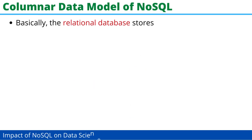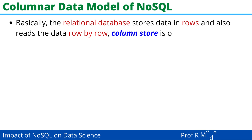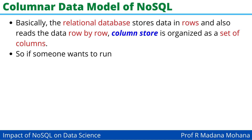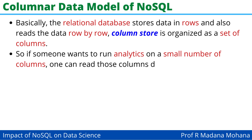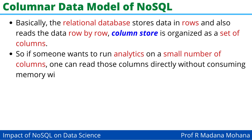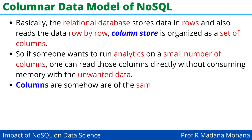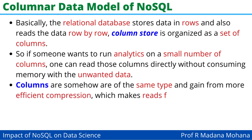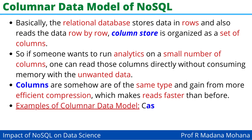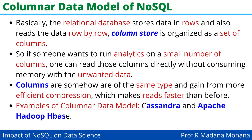Relational databases store data in rows and also read the data row by row. A column store is organized as a set of columns, so if someone wants to run analytics on a small number of columns, one can read those columns directly without consuming memory with unwanted data. Columns are of the same type and gain from more efficient compression, which makes reads faster. Examples of columnar data model are Cassandra and Apache Hadoop HBase.